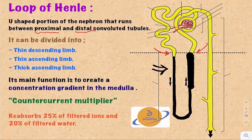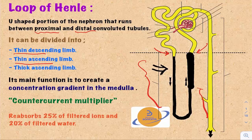The Loop of Henle is divided into three parts: the thin descending part, the thin ascending part, and the thick ascending part.